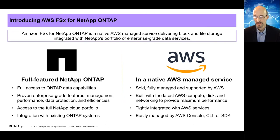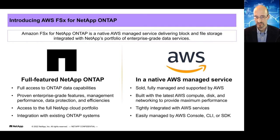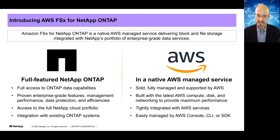Amazon spent about a year and a half taking our Data ONTAP operating system and incorporating it into their cloud. It is running as a native service in the Amazon cloud — they own it, operate it, and run it. You buy it through them, and it gives you all the benefits you may have had with NetApp on-premise, including the Data Fabric intelligence. You can also deploy FSx for NetApp, otherwise known as FSxN, with our Cloud Manager tool from NetApp at cloud.netapp.com.